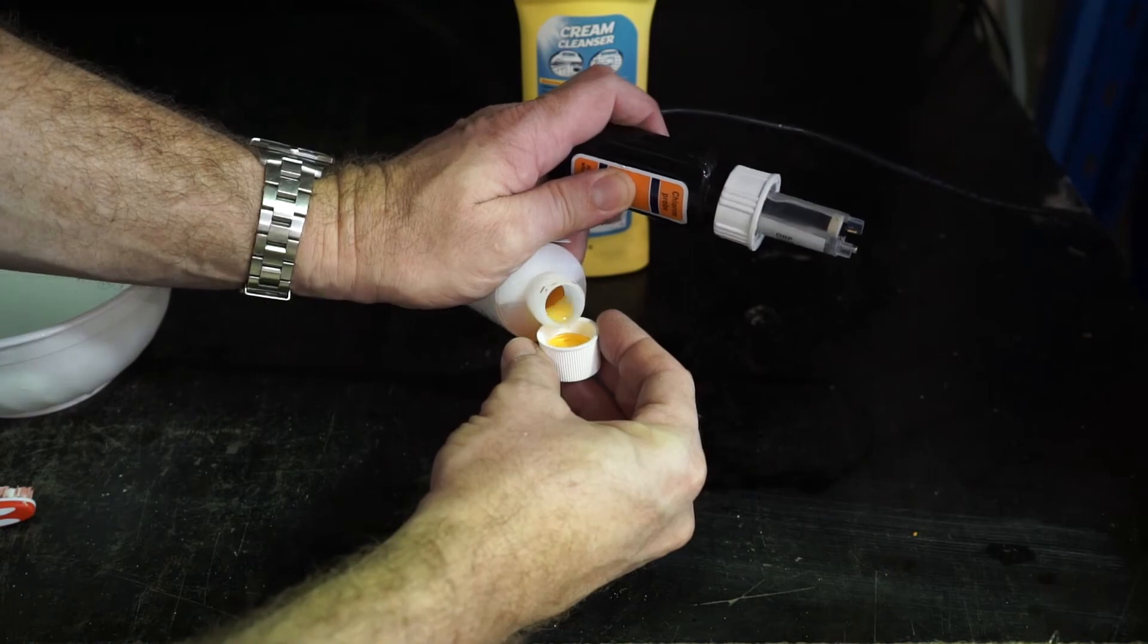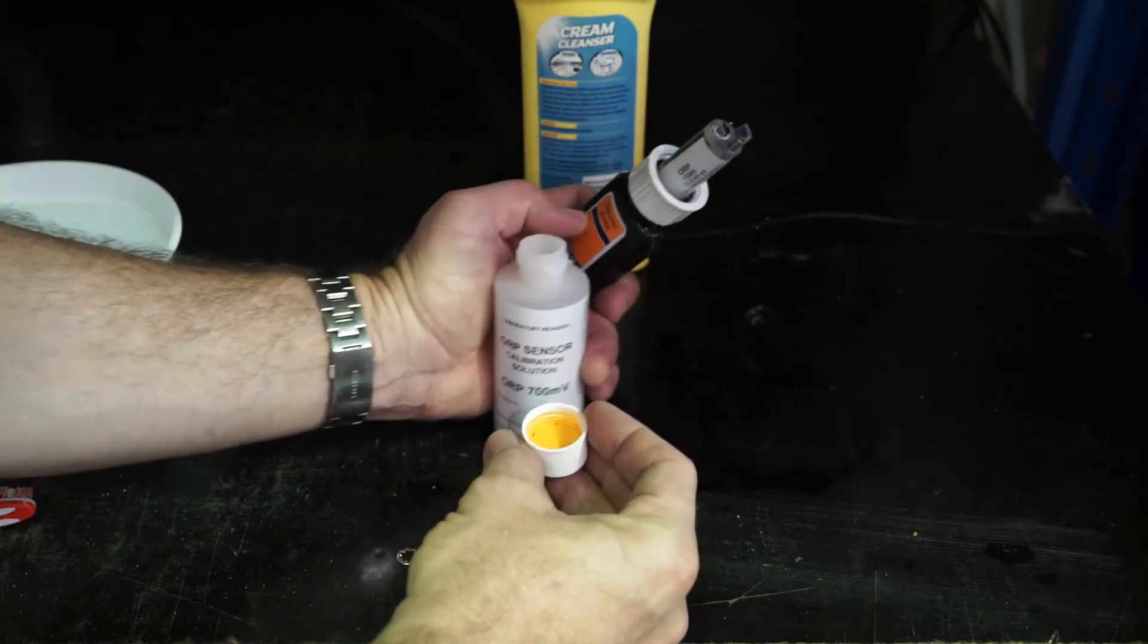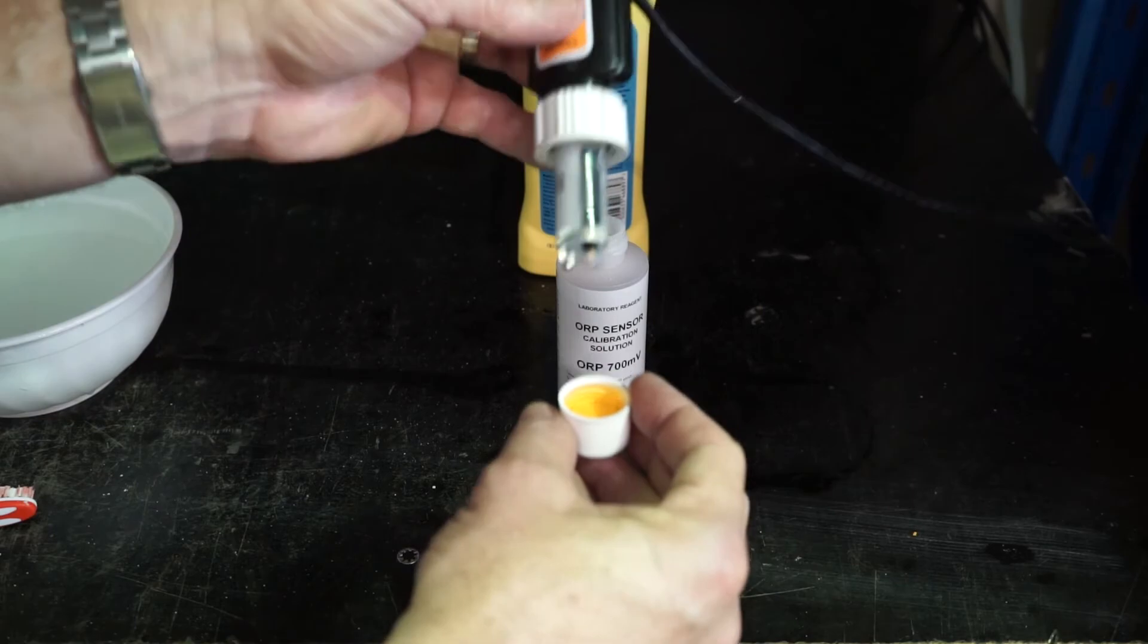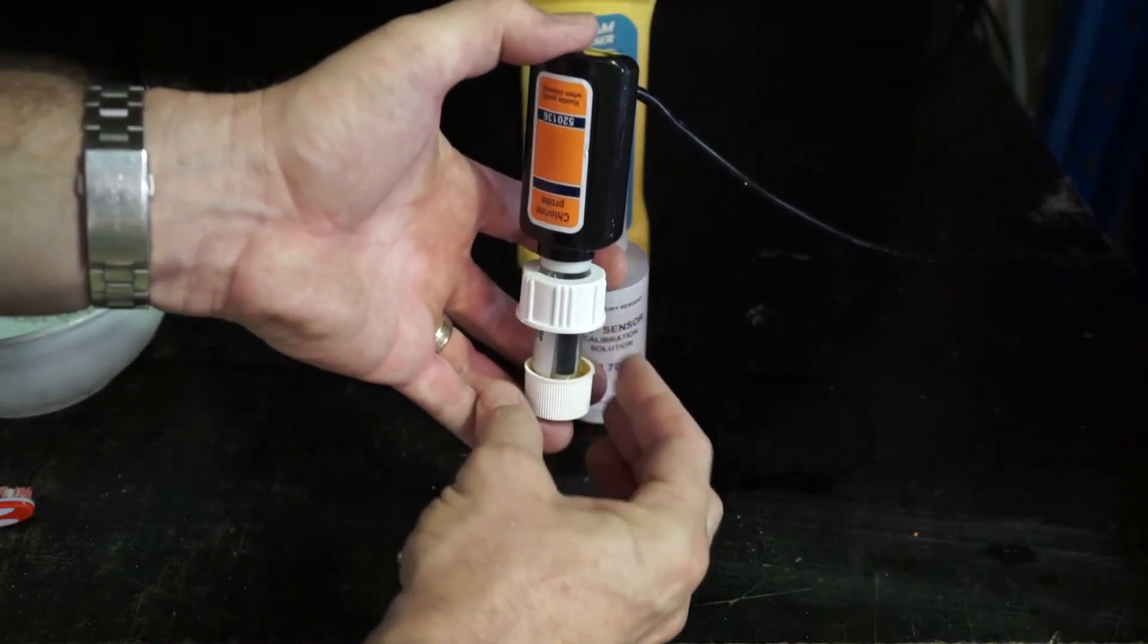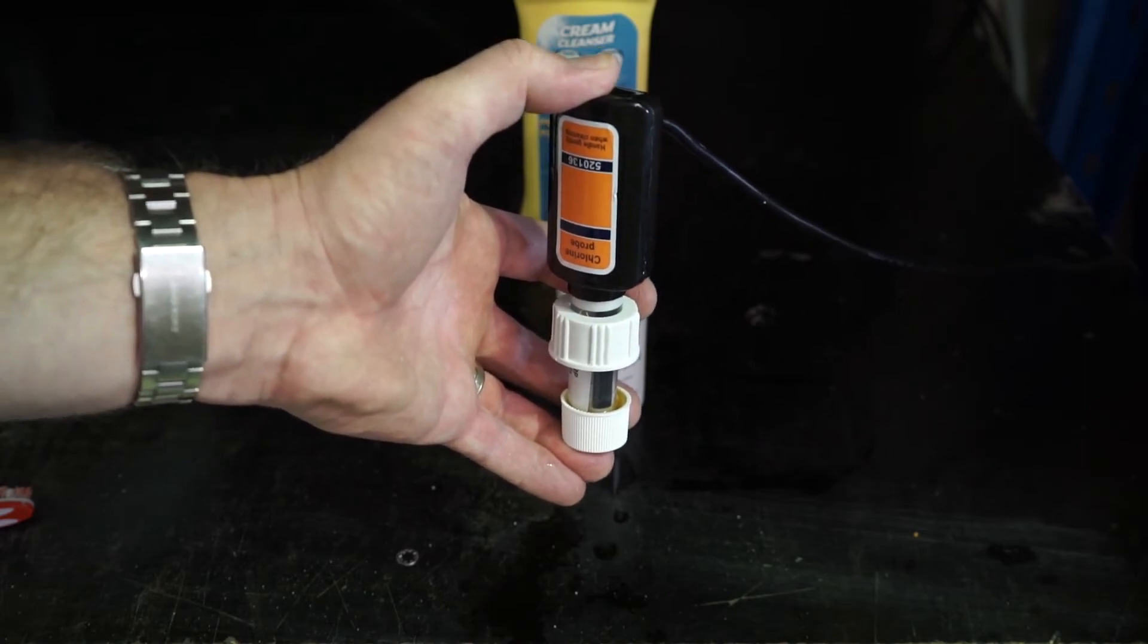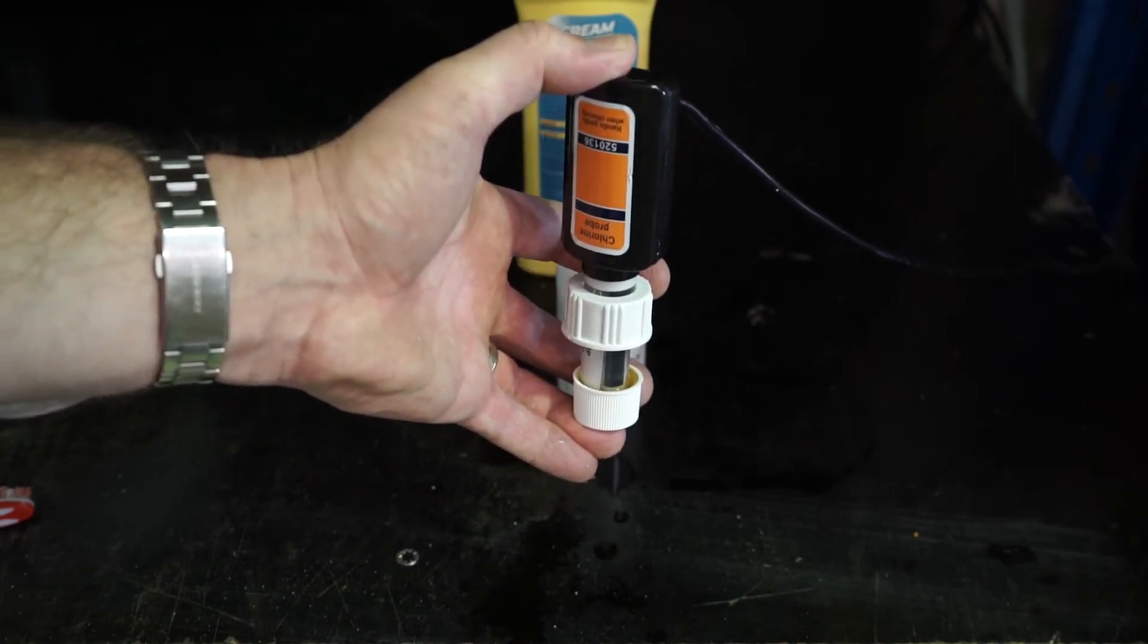We will pour our solution in the top of the cap and place our Gold Tip probe in the solution. Again, the tip of the probe needs to be fully submersed.